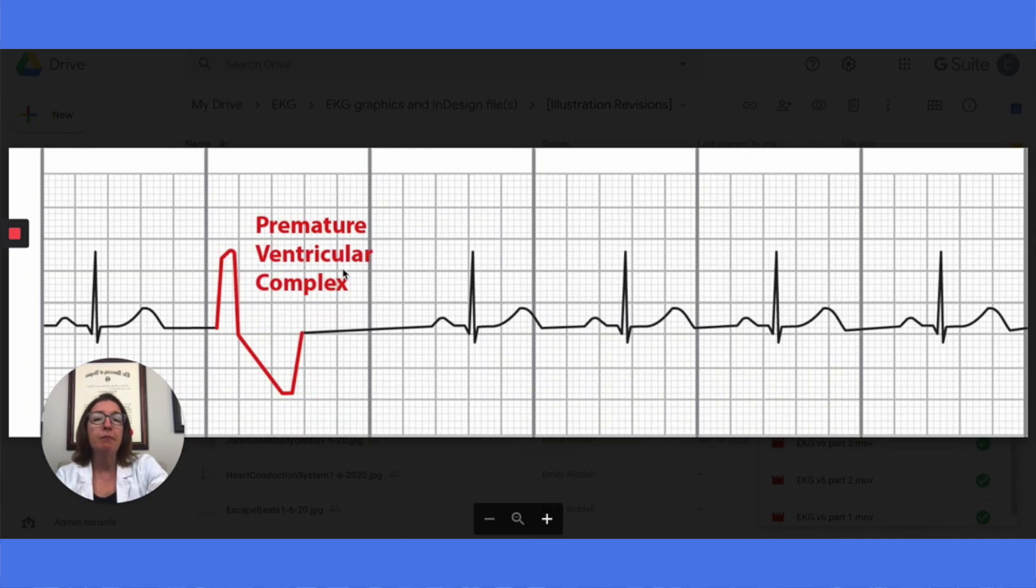A PVC is an abnormal impulse that originates from the ventricle and occurs early. With the PVC, the premature complex will not have a P wave, and the QRS complex will be very wide. So it is definitely over three small boxes wide.